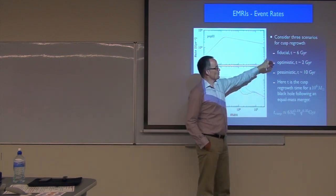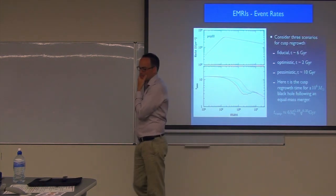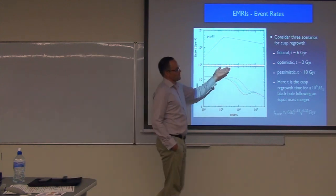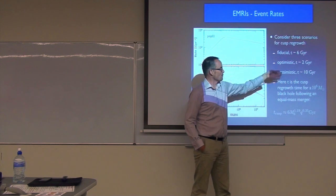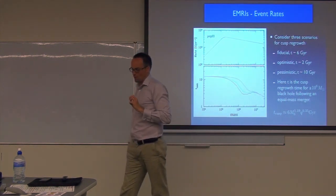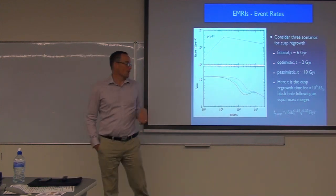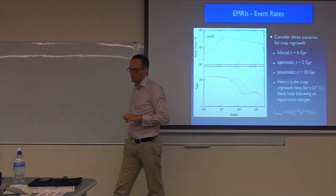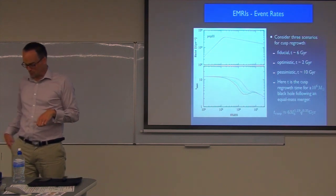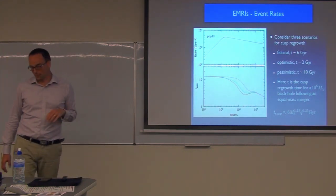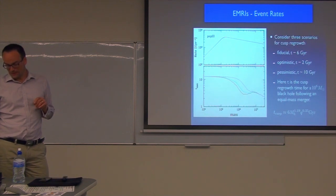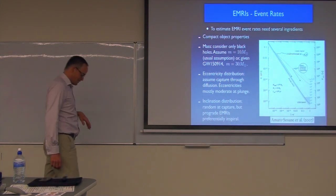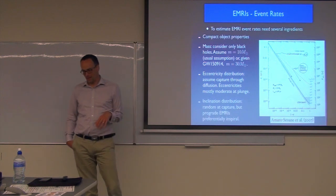The time it takes for a cusp to regrow is a bit uncertain, depending on the physics of the stellar system. A typical number is a few gigayears, about half the age of the universe. We can be optimistic and say it grows quickly, in about two gigayears, or pessimistic and say that after a merger that system is never available again within a Hubble time to host an EMRI. You can put this all together and try to make predictions for how many EMRIs we're likely to see.